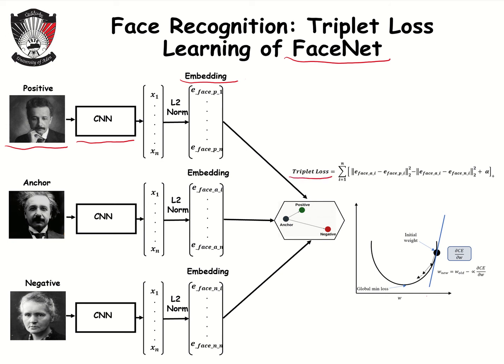The key idea of the triplet loss is that face vectors for the same identities become more similar or have a smaller distance, as shown here, whereas face vectors that belong to different identities are expected to be less similar or have a larger distance, as shown here.